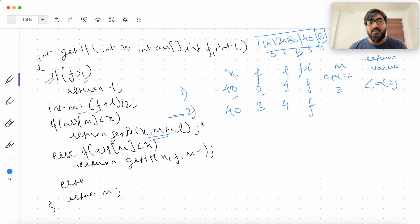F is greater than L is false. You come here. M is F plus L by 2. 3 plus 4 by 2 is 7 by 2 is 3. Arr of M is less than X. Arr of M is 40. 40 is less than 40 is false. You check here. 40 is greater than 40 is false. Finally else you return M. So you return 3 which is the return value. So this basically is doing binary search.